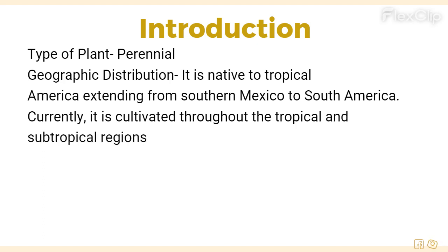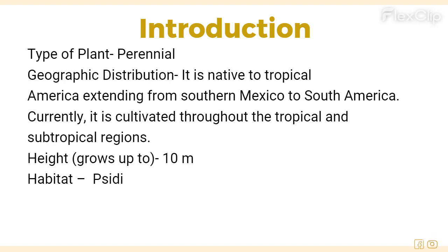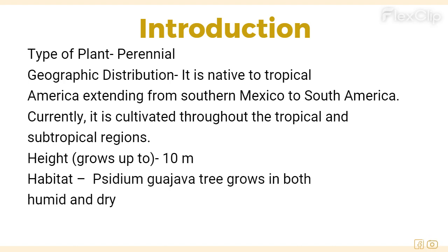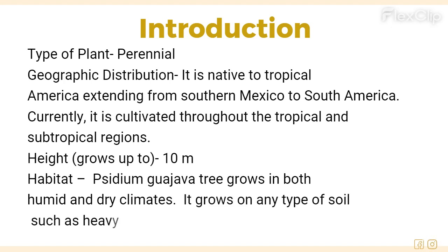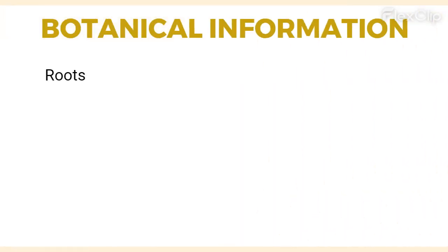Height: grows up to 10 meters. Habitat refers to the type of environment in which an organism or group normally lives or occurs. Psidium guajava grows in both humid and dry climates, and on any type of soil such as heavy clay soil, light sandy soil, etc.